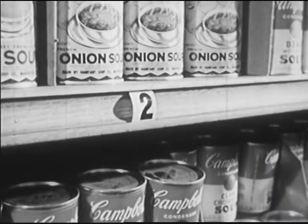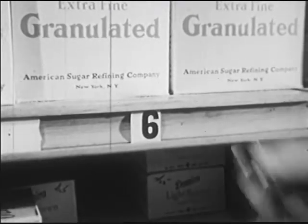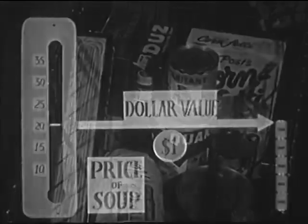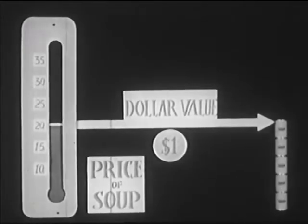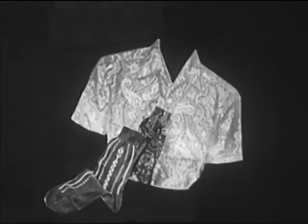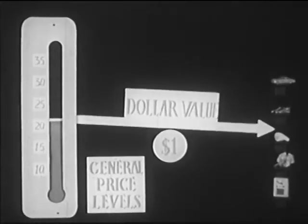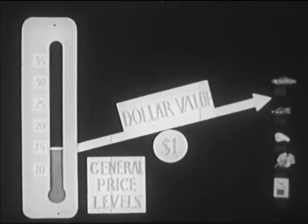Now, of course, the price of soup is only one price. The day the price of soup goes down, the price of sugar may go up. But sometimes the prices of many things move upward or downward at the same time. So when we talk about the value of the dollar, we usually mean not the price of one article, but the prices of many articles — the general price level. As the general price level goes up, the value of the dollar goes down; as the general price level goes down, the value of the dollar goes up.